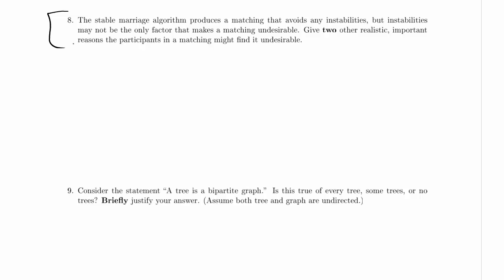Other realistic reasons the participants in a matching might find it undesirable. I mean, an instability is a case where two people from opposite sides are willing to get together and want to get together over the people that they were matched with. But why might people in the matching find it undesirable? There's no guarantee that you're matched with the person you want to be matched with most by the stable marriage algorithm. And indeed, you might be matched with the person you want to be matched with least. So there's plenty of reason for individuals not to find a matching desirable.